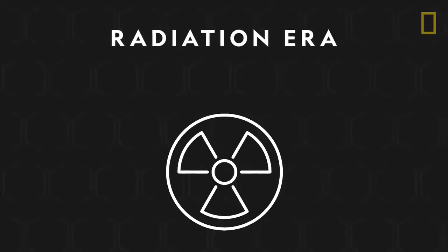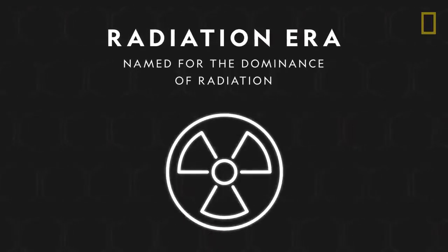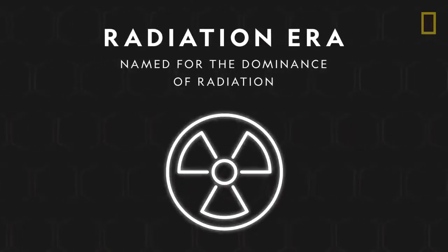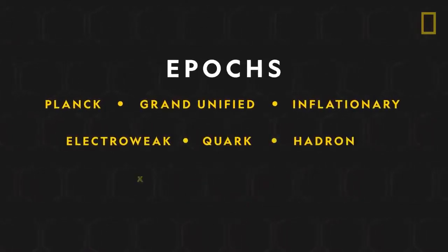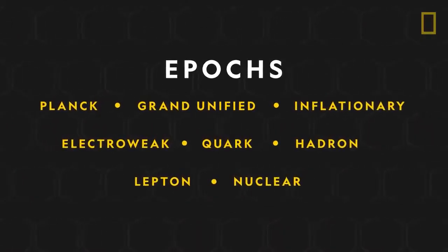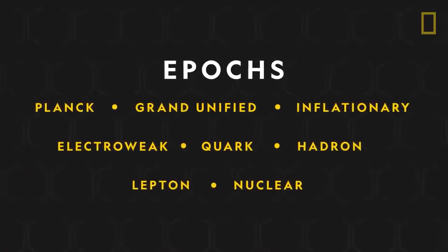First came the radiation era, named for the dominance of radiation right after the Big Bang. This era is made of smaller stages, called epochs, that occurred within the universe's first tens of thousands of years.